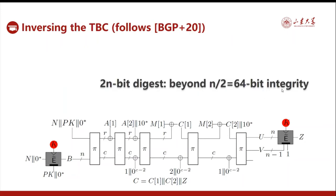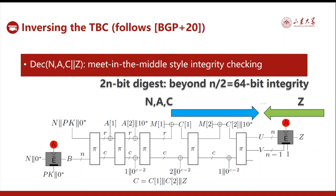As the hashing digest absorbed by the TBC could be 2n bits, this overcomes the birthday integrity issue. The use of TBC enables a meet-in-the-middle-style integrity checking. In detail, given n, a, and c, we compute along this direction to reach intermediate values u and v. Then we use v as the tweak and the user-specified tag z to compute along the inverse direction to reach the value u*. We then check if u equals u* for the integrity checking. By this, even if the integrity checking action leaks something, it only leaks information about this value — the hash digest u is ultimately non-secret, while the inverse of the tweakable block cipher u* is a pseudorandom value that is also useless.